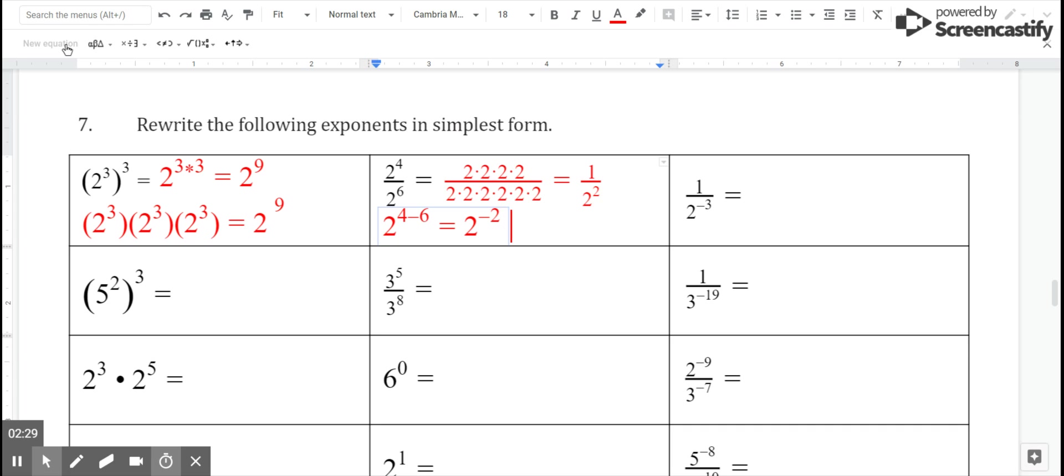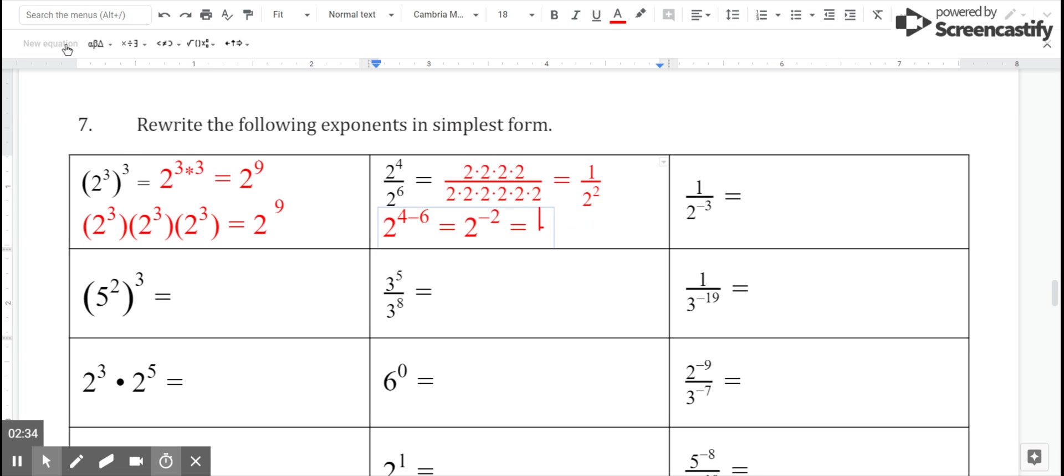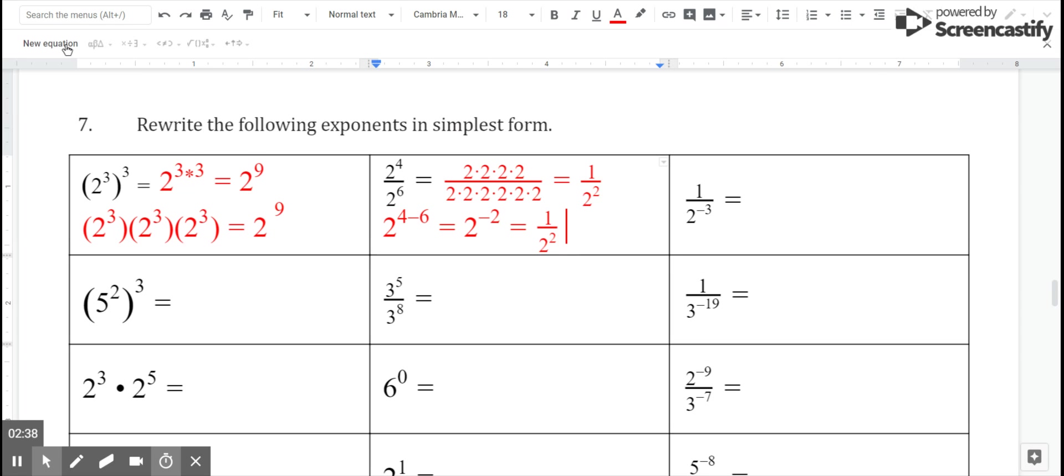Once I've gotten that answer, what I need to do is I need to take that negative power and make it a positive power to get my exponent in its simplest form. So that would become one over two squared.